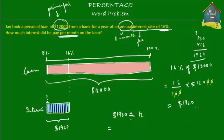So what is that equal to? 1,920 divided by 12: 12 goes into 72 — 6 times 12 is 72 — then you have 0 here and put a 0 here. So 1,920 divided by 12 gives you 160. Each month he will have to pay an interest of $160. This question mark is equal to $160.